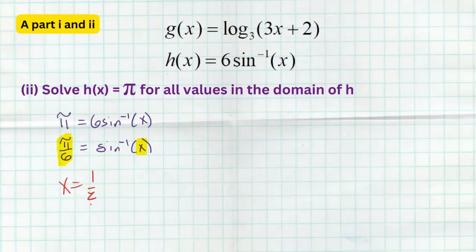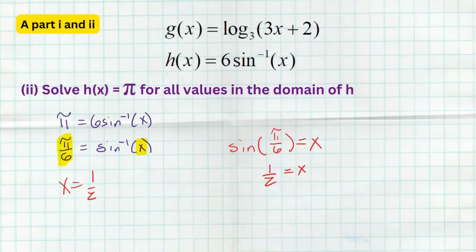Another way to solve this is the old switcheroo: switch from inverse sine to regular sine by swapping input and output. So sine of π/6 equals x. From the unit circle, sine of π/6 equals 1/2, therefore x = 1/2. On the actual exam Section A will only have two functions, but let's look at one more to practice — we solved a log and an inverse trig, now let's solve an exponential function.